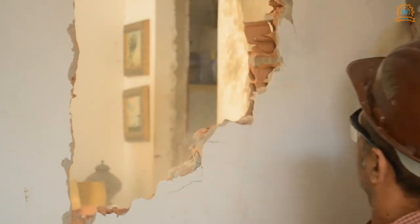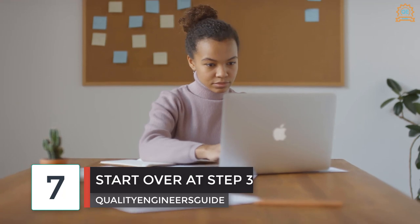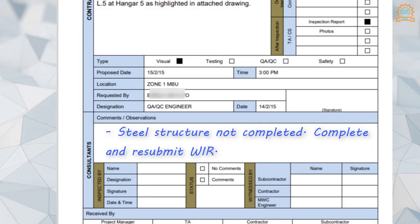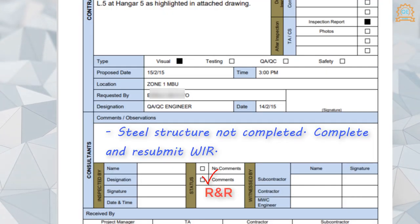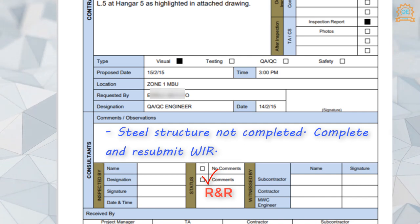Step seven: start over at step three. The main contractor's document controller shall start over again at step three, following the process for the revision one work inspection request until it reaches step six. If the WIR still gets a revise and resubmit status, go back to step three, and so on. As a QA/QC engineer, you have to make sure that the site you are going to inspect with your consultant is fully ready, in order to avoid resubmissions which delay the project — because you cannot proceed with the following work without the submitted WIR being approved.